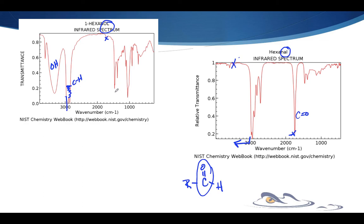All of this stuff over here is known as the fingerprint zone, and these things are very complicated. Trained people can make sense out of it. Computers can match it up to other samples and say these two are exactly the same — kind of like a fingerprint — and identify what substance it is. But for us, we're just not trained enough to do things like that.